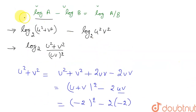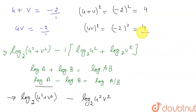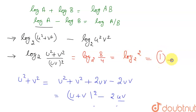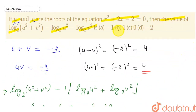Now the expression becomes log base 2 of (8 divided by 4), which is log base 2 of 2. Since the argument and base are the same, the value of log base 2 of 2 is 1. Matching with the options, option B is correct — the answer is 1. Thank you.